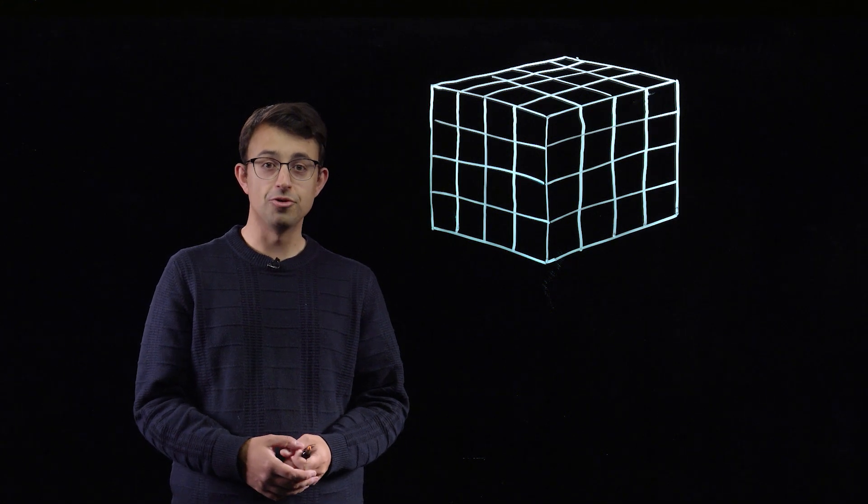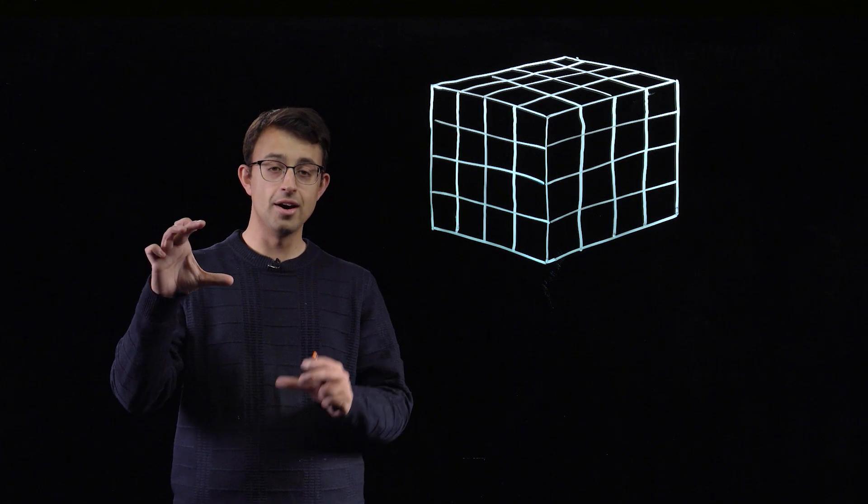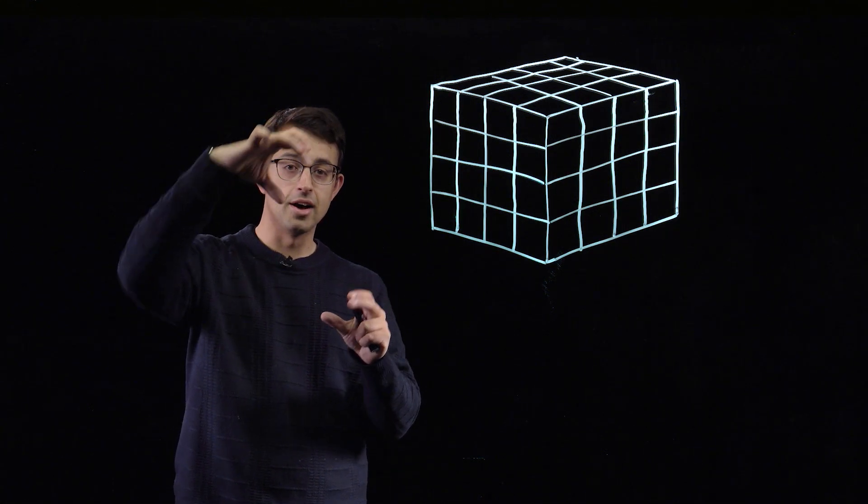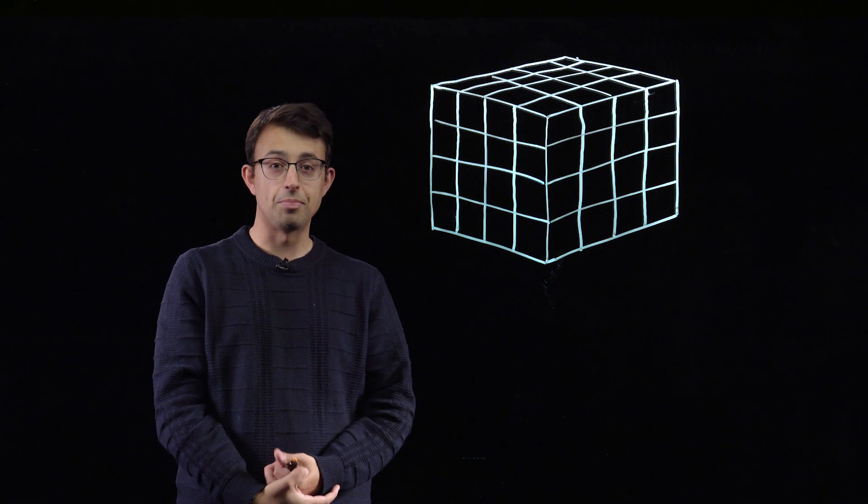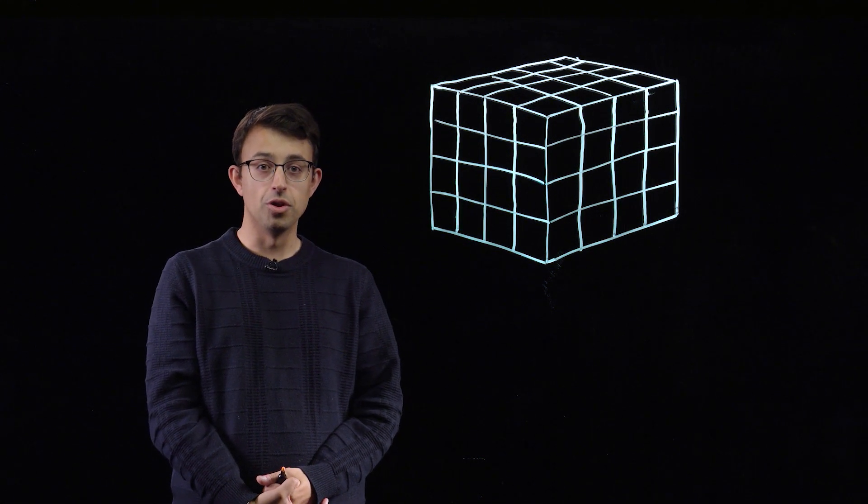What we have to do is find some pairs, so a pair here, a pair here, a pair here, and three more such pairs of smaller cubes with the following properties.